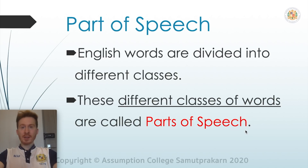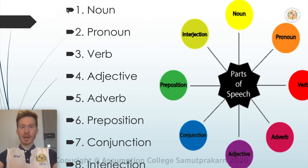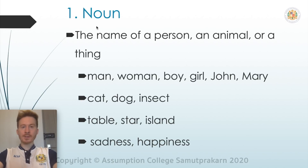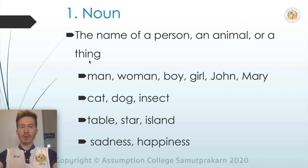So what are the different classes of words? We have nouns, pronouns, verbs, adjectives, adverbs, prepositions, conjunctions, and interjections. First, let's look at nouns. A noun is the name of a person, an animal, or a thing — person, animal, place, or thing.